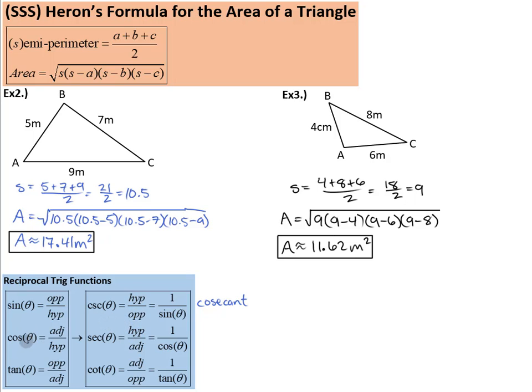The reciprocal of cosine is something called secant, which is instead of the adjacent over hypotenuse, it's the hypotenuse over adjacent. Or of course, it's just 1 over cosine, the reciprocal of cosine. And tangent's reciprocal is called cotangent, abbreviated COT.